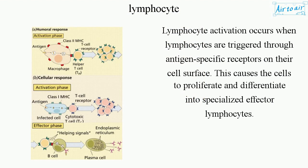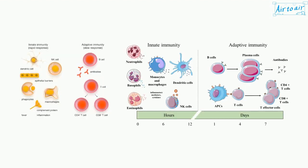Lymphocyte activation occurs when lymphocytes are triggered through antigen-specific receptors on their cell surface. This causes the cells to proliferate and differentiate into specialized effector lymphocytes.